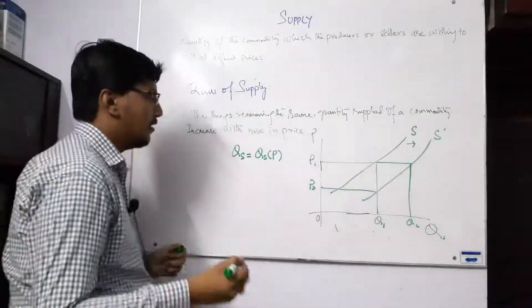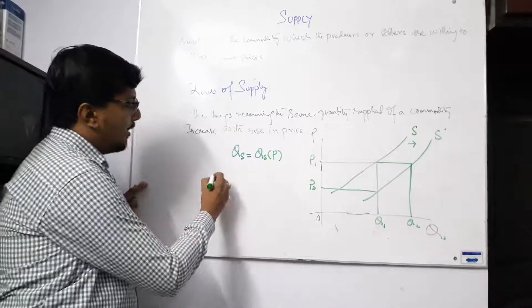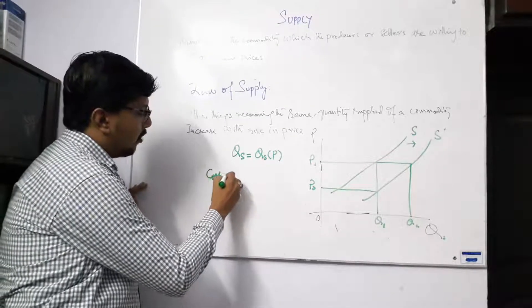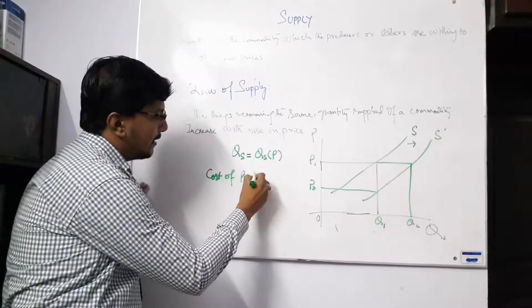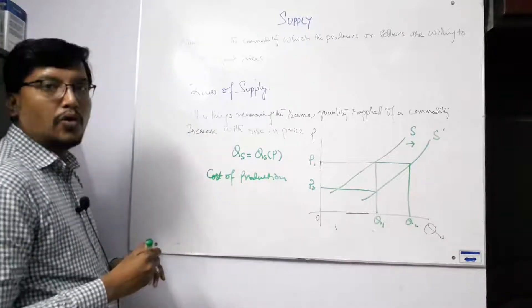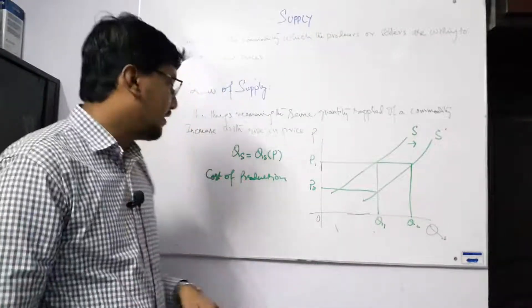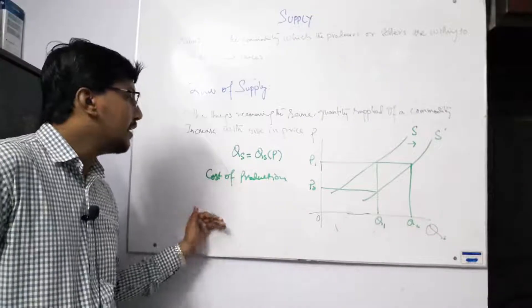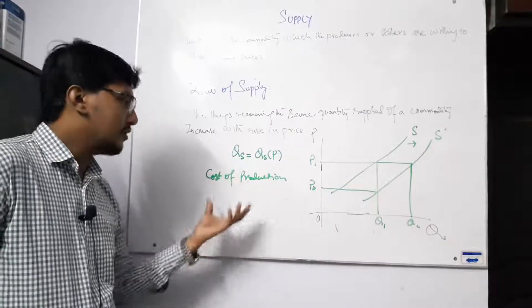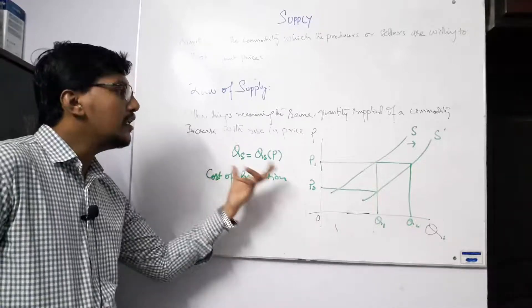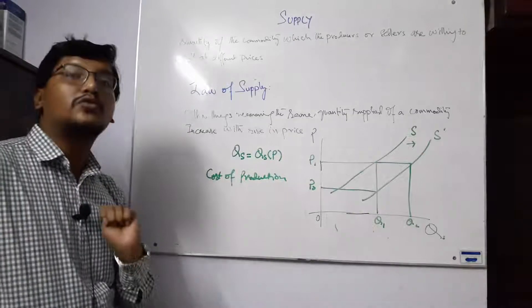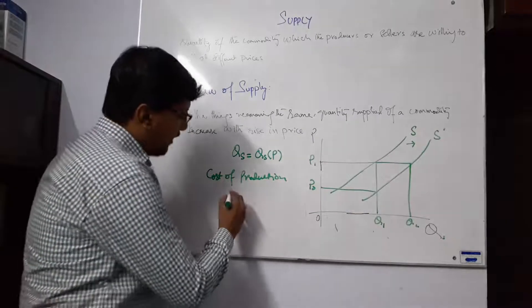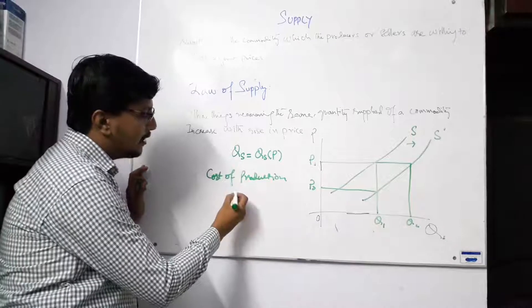Now our last question is why this curve is shifted to the rightward. There are three to four things, but if we join the main reason is the cost of production. So the cost of production - there is a natural phenomena that seller would not be the same. So the cost of production will be low, so that we will say that at the same prices we have to supply more quantity, or at the same commodities prices will be lower.